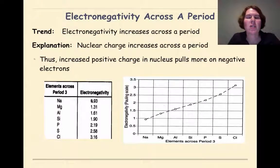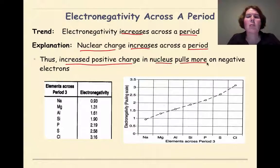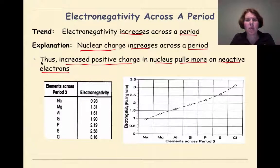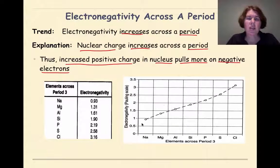Let's look at the trend of electronegativity across the period. The general trend states that electronegativity is going to increase across the period, very much like ionization energy. The explanation is that the nuclear charge — the number of protons in the nucleus — is going to increase across the period. Thus, the increased positive charge in the nucleus pulls more on the negative electrons. The more positive the nucleus is and the closer the valence electrons are, the more that nucleus can attract other electrons to fill the outermost shell. Looking at the data for period 3, sodium has an electronegativity of 0.93, and as we go across the period it increases up to chlorine at 3.16.